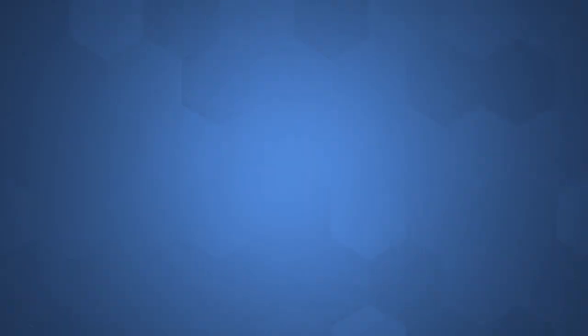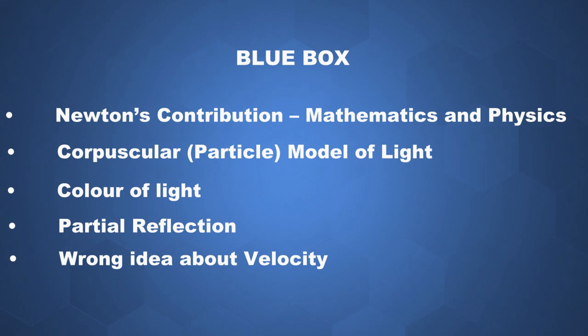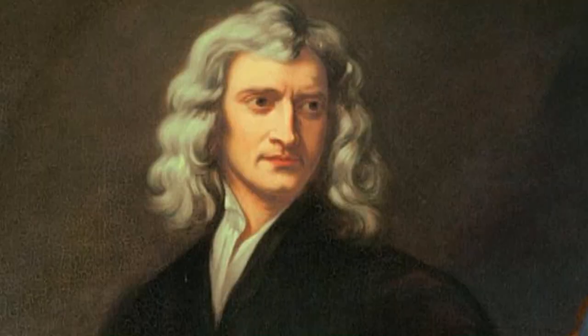After the introduction, we have a blue box with a few points: Newton's contribution, corpuscular model of light, color of light, partial reflection, and wrong idea about velocity. Newton contributed his work in mathematics and physics — particularly in gravitation, mechanics, and light.